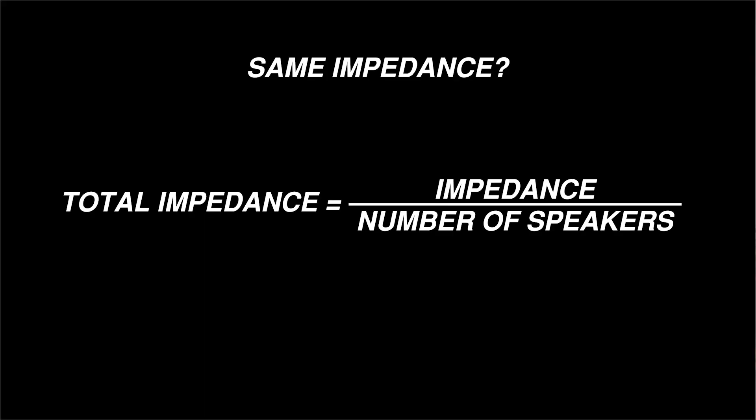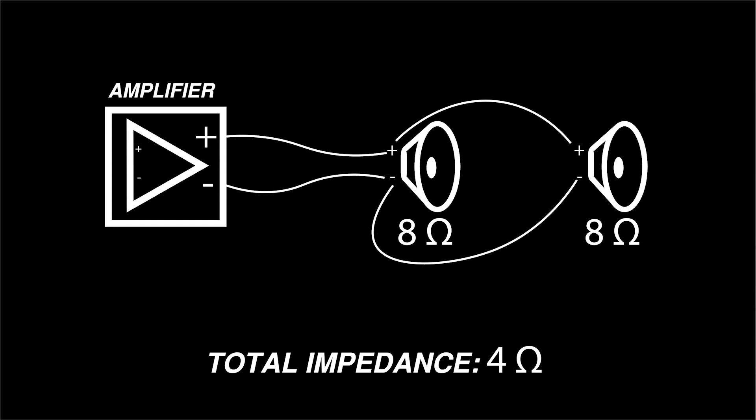When connecting multiple speakers in parallel, calculating the total impedance is a bit more complicated. If all of the speakers have the same impedance, you simply take that impedance rating divided by the number of speakers being connected. For example, connecting two 8 ohm speakers in parallel will present a 4 ohm load to the amplifier — calculated by dividing 8 ohms by two speakers.